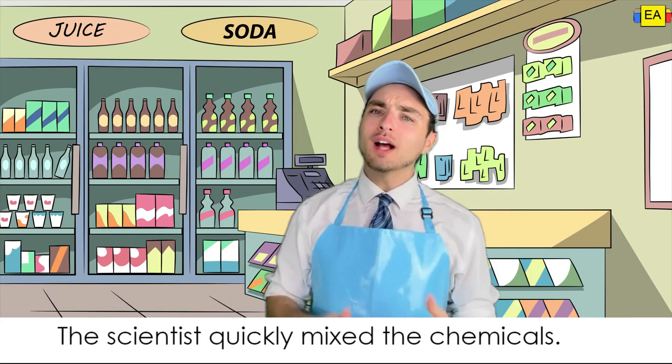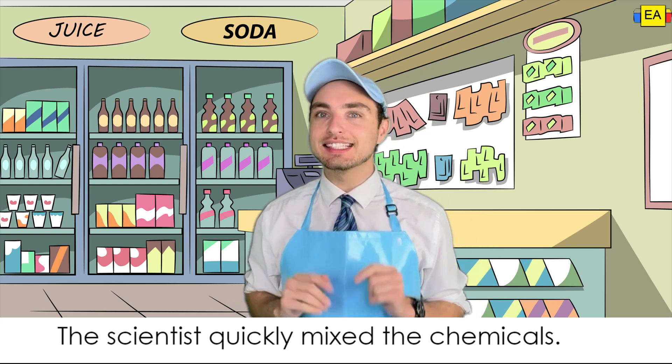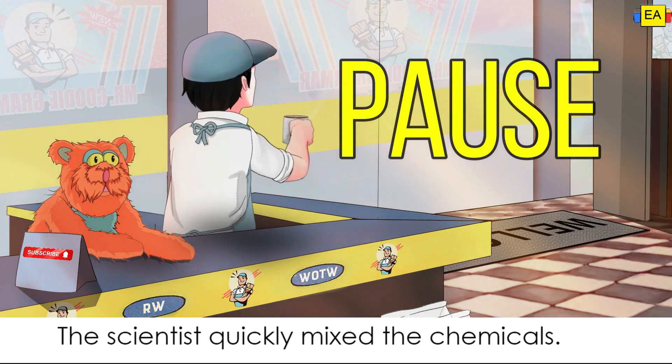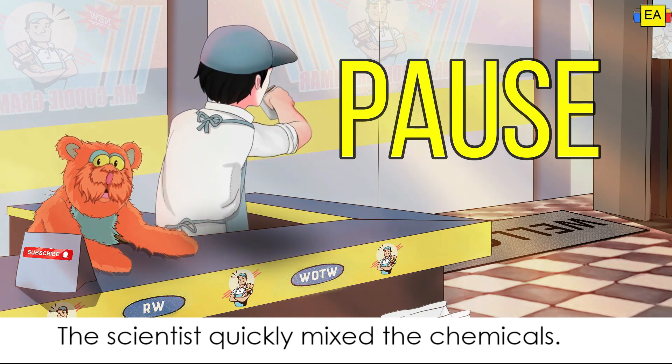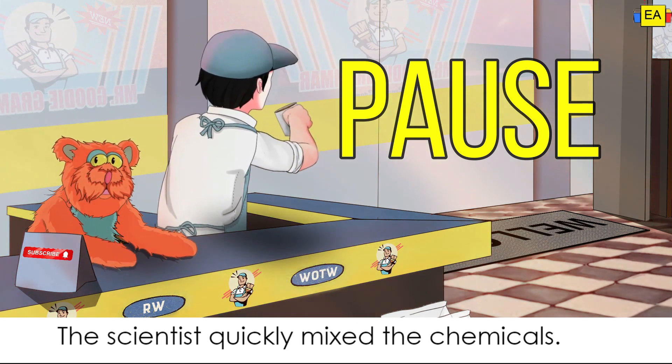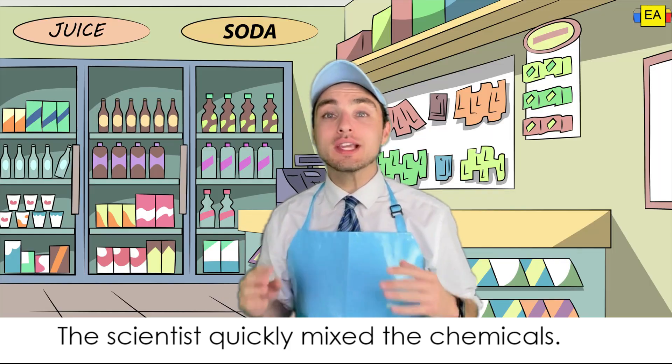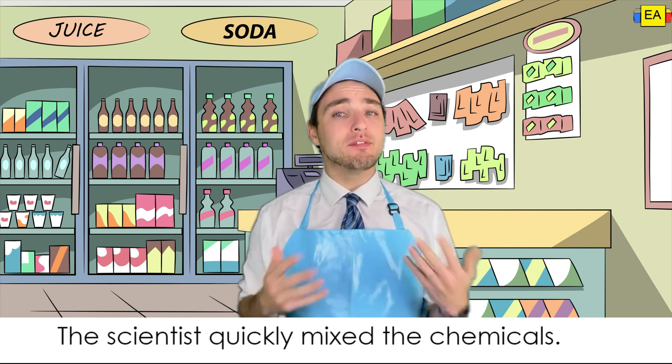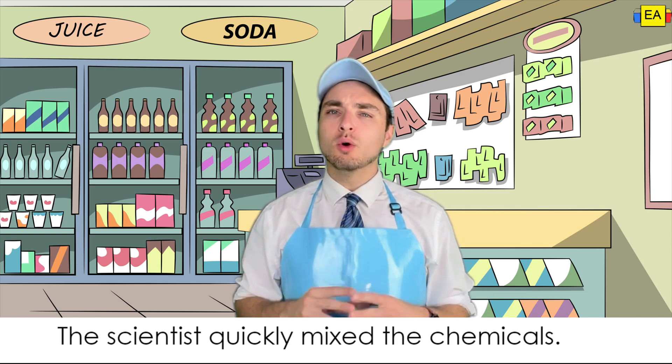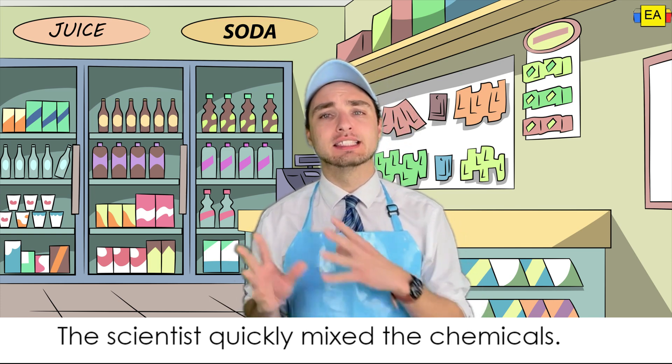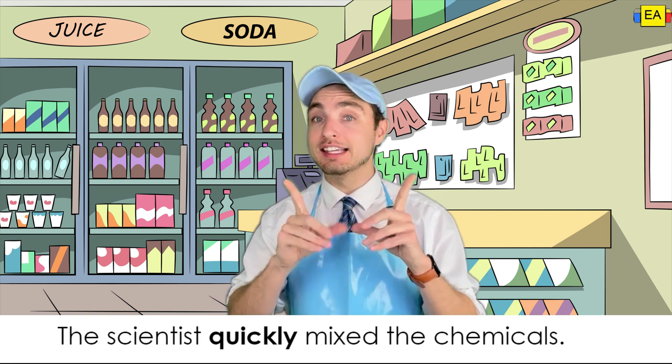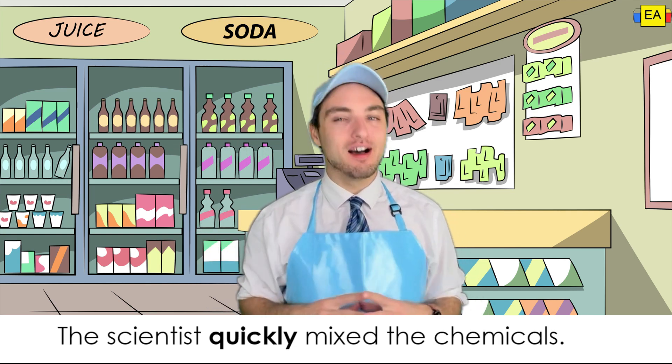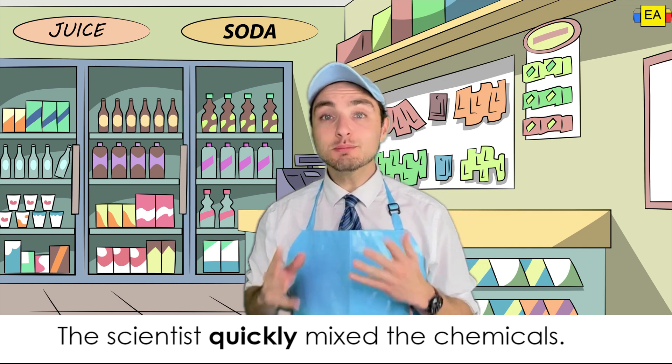Alrighty, what's the adverb in this sentence? Take a second. Okay, here's the answer. First, let's find our main verb. The main verb of this sentence is mixed. Well, how did the scientist mix the chemicals? The scientist quickly, ending with that L-Y, mixed the chemicals. Therefore, quickly is the adverb of this sentence. Let's move on.